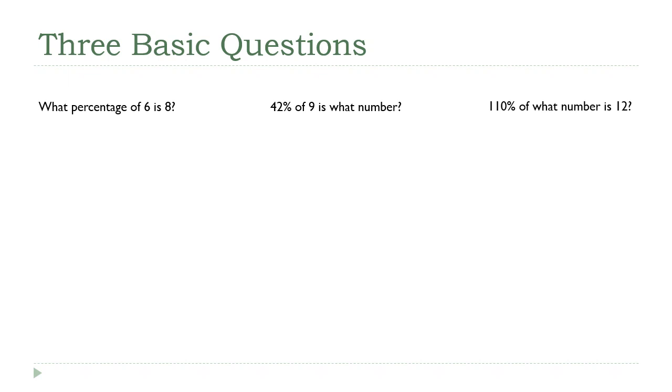Look at this first one: What percentage of 6 is 8? Well, 'what percentage' becomes x, 'of' is multiplication, 6 is 6, 'is' becomes equals, and 8 is a number that stays the way it is.